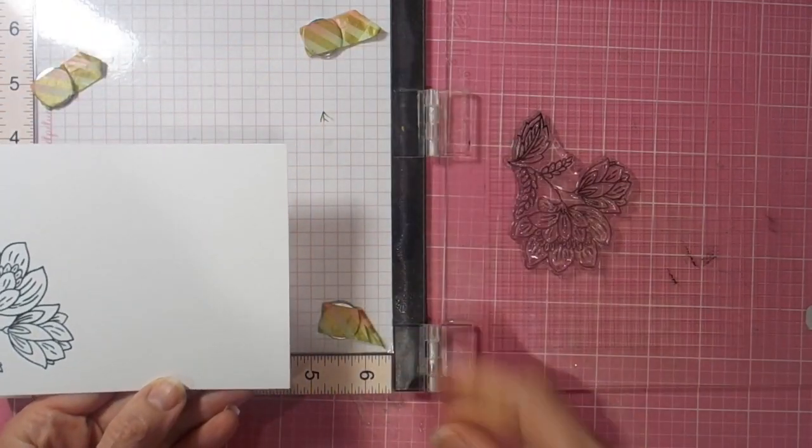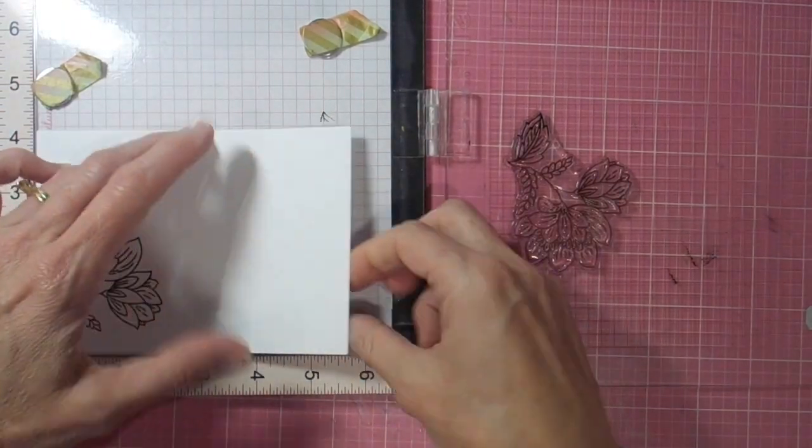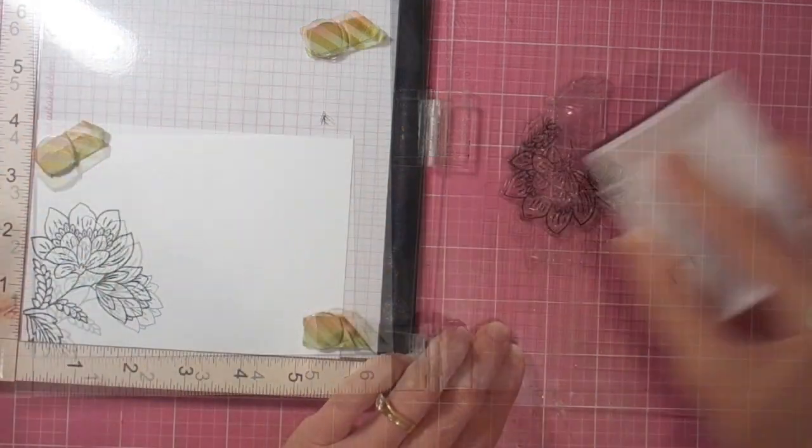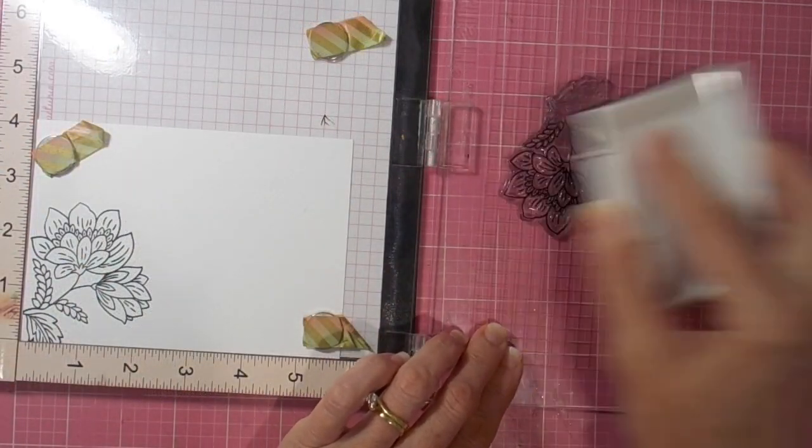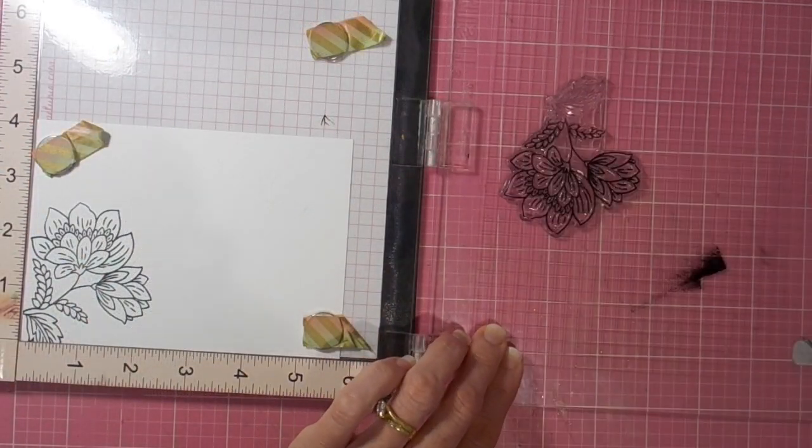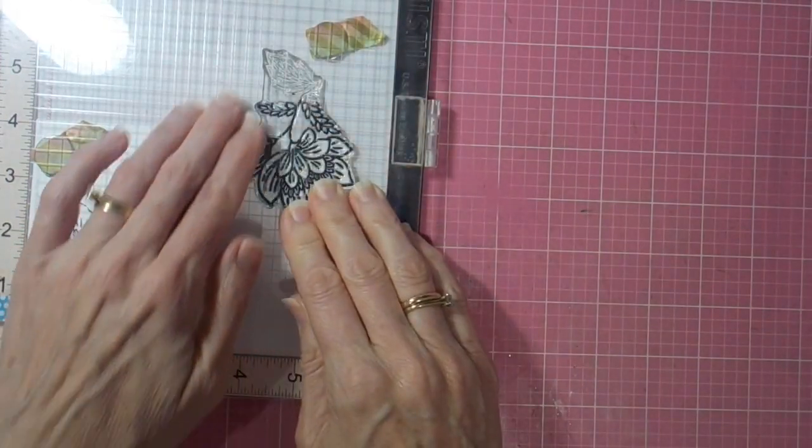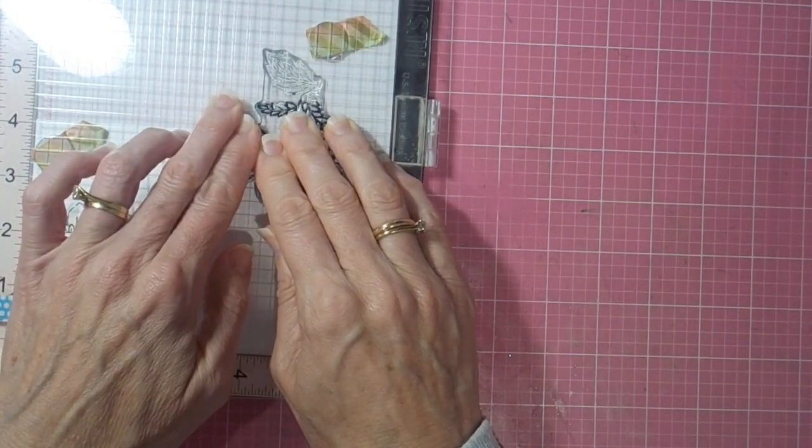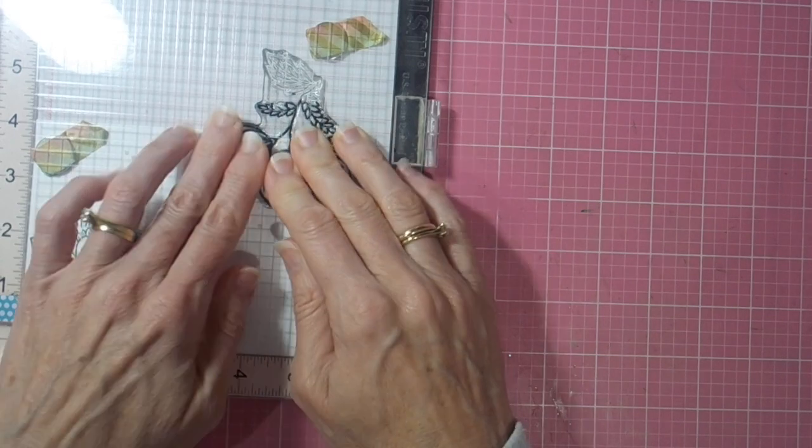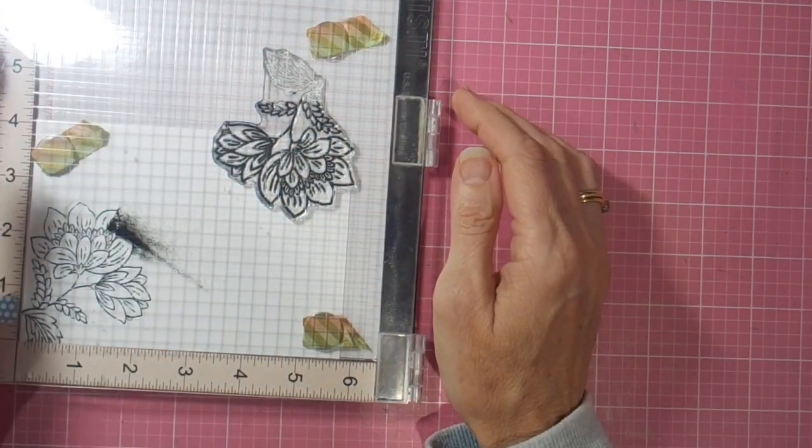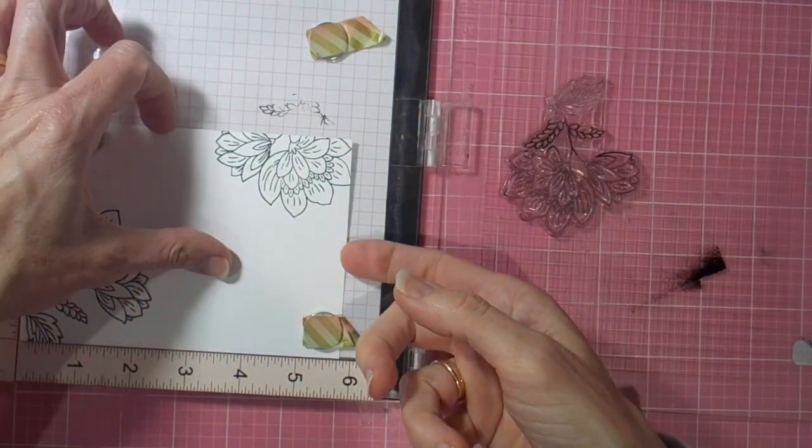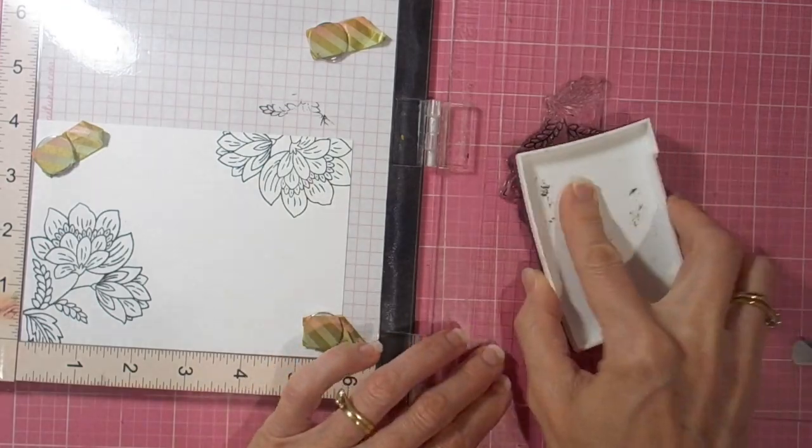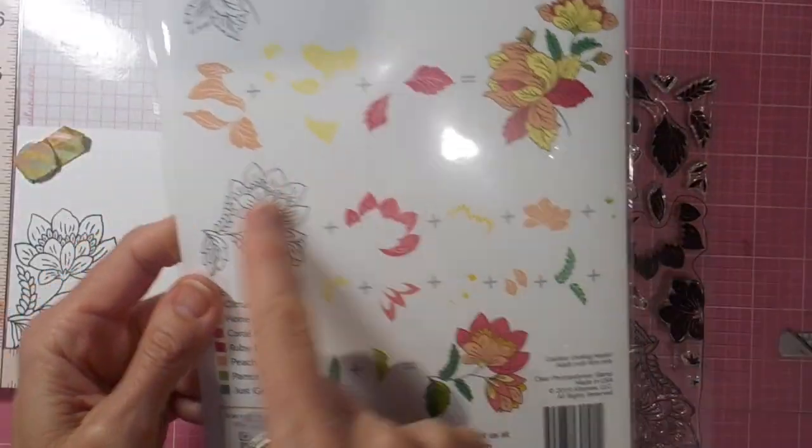Inking it up with my VersaFine onyx black, and I do ink it twice just to get a nice bold coverage. Then I was going to leave it in the same spot exactly but ended up moving it and just getting a smaller amount of the floral image up in the top right corner. This is the way my card ends up being oriented, with the largest spray in the bottom left and this smaller spray in the top right.